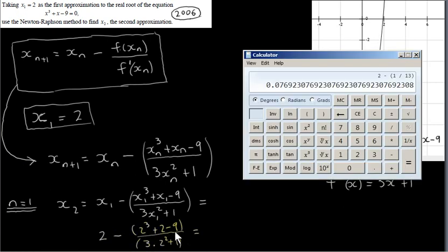So in the numerator of this fraction, we get 2 cubed is 8 plus 2 is 10 minus 9 is 1 over 3 times 2 squared. That's 3 times 4, which is 12, plus 1 is 13. So we have 2 minus 1 over 13, which is 1.9231.